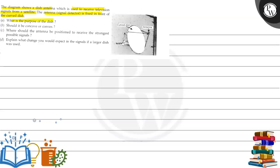First question is what is the purpose of the disc? Second one, should it be concave or convex? Third one, where should the antenna be positioned to receive the strongest possible signal? And fourth one, explain what change you would expect in the signal if a larger disc was used.